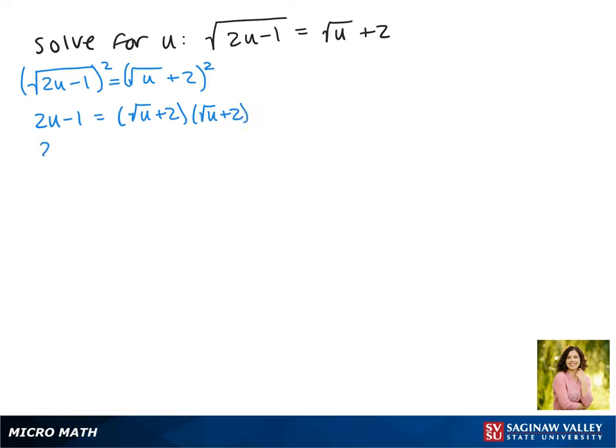Our left side stays the same and on the right, when we FOIL this out, we get u plus 4 square root of u plus 4.